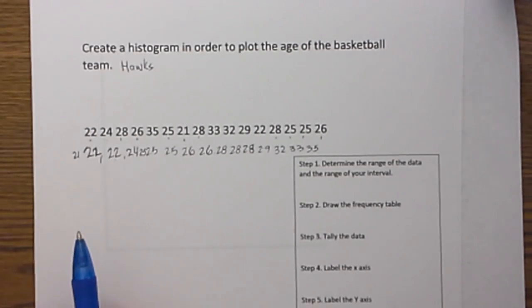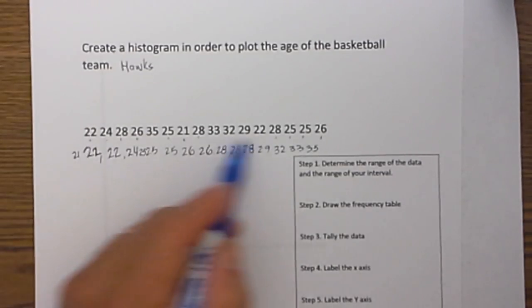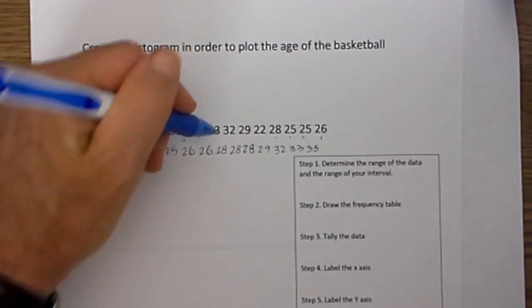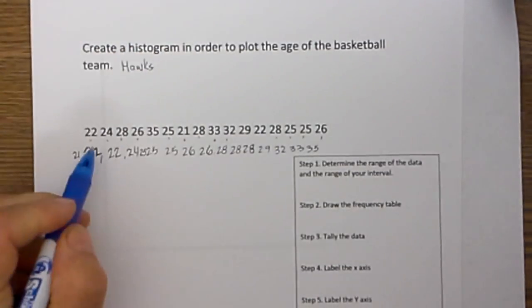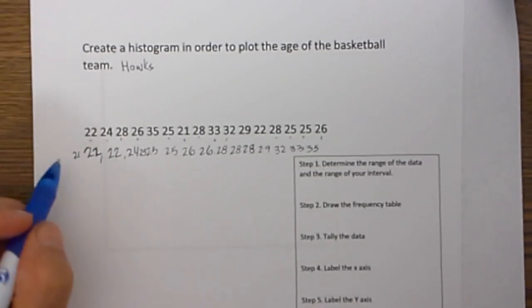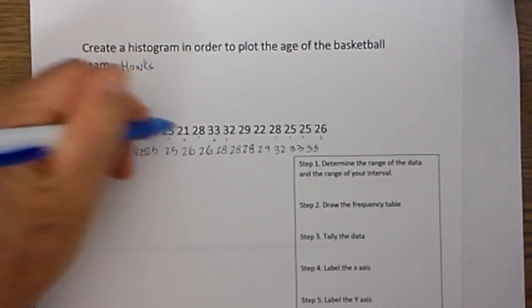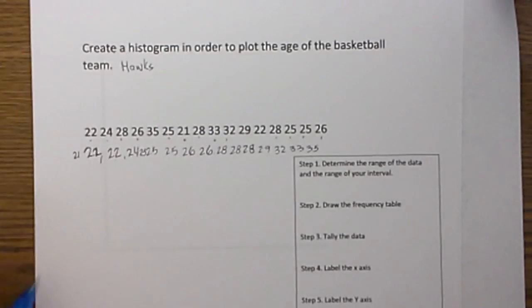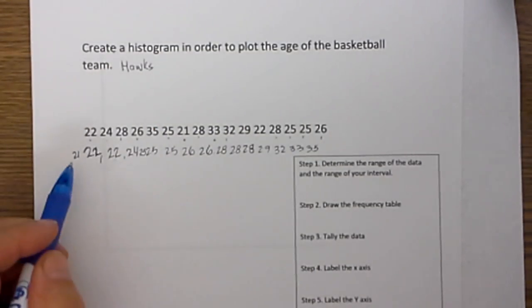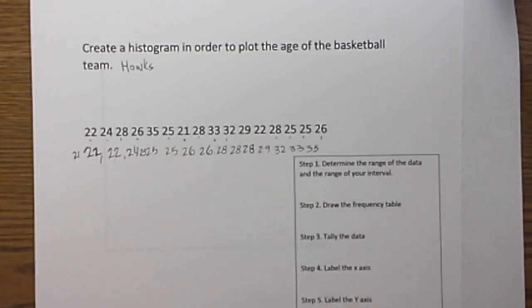This first step you do not have to do, but I would highly recommend it. Just go ahead and put the numbers in numerical order, and I have placed a little dot under each one, because as I write it down, I put a little dot under it. So now here are all the numbers 21 through 35.